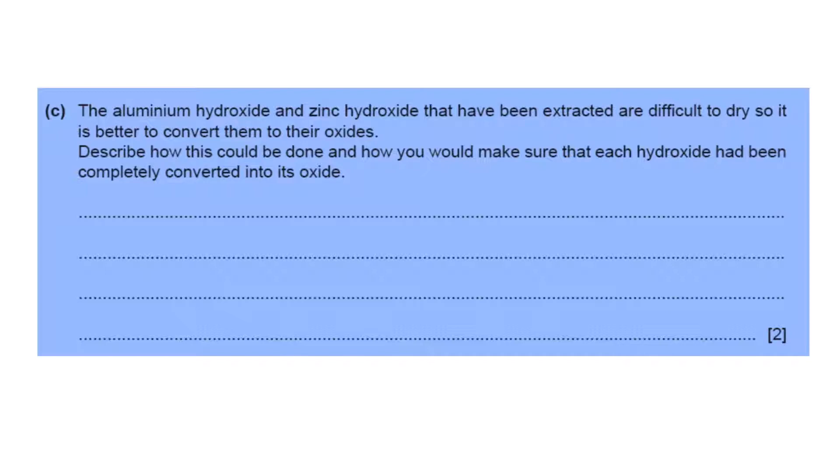Aluminum hydroxide and zinc hydroxide have been extracted and are difficult to dry, so it is better to convert them to their oxides by heating the hydroxides to constant mass.